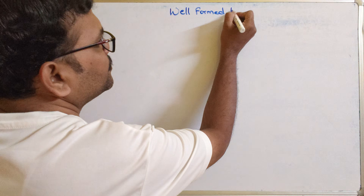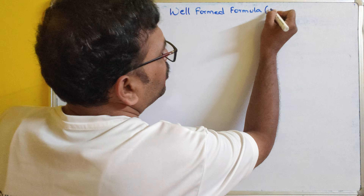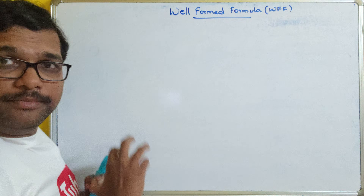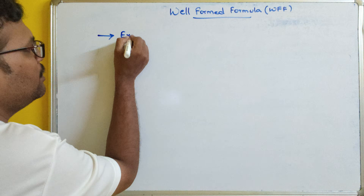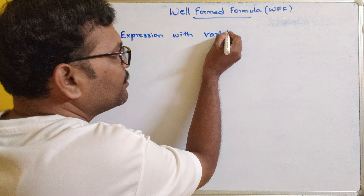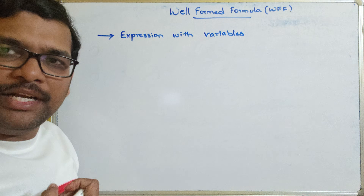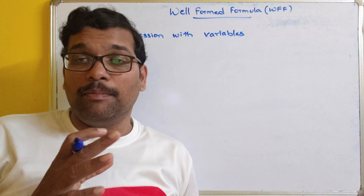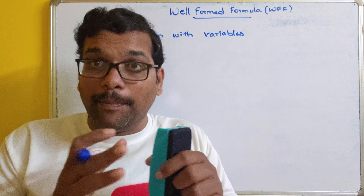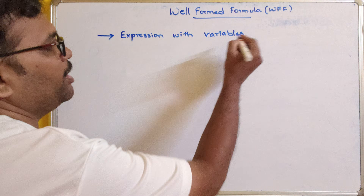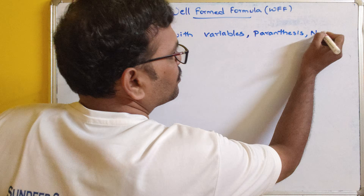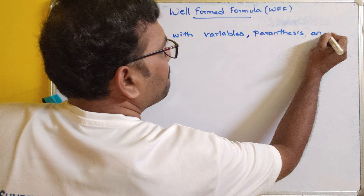Well-formed formula — you can also call it as WFF. Now let us see what is this well-formed formula. A well-formed formula is an expression with variables. What are these variables in discrete mathematics? These variables represent the proposition. We have studied that a proposition is a statement which will have either true or false, and it is usually represented with capital letters. Those letters we call variables, parentheses, and connectives.